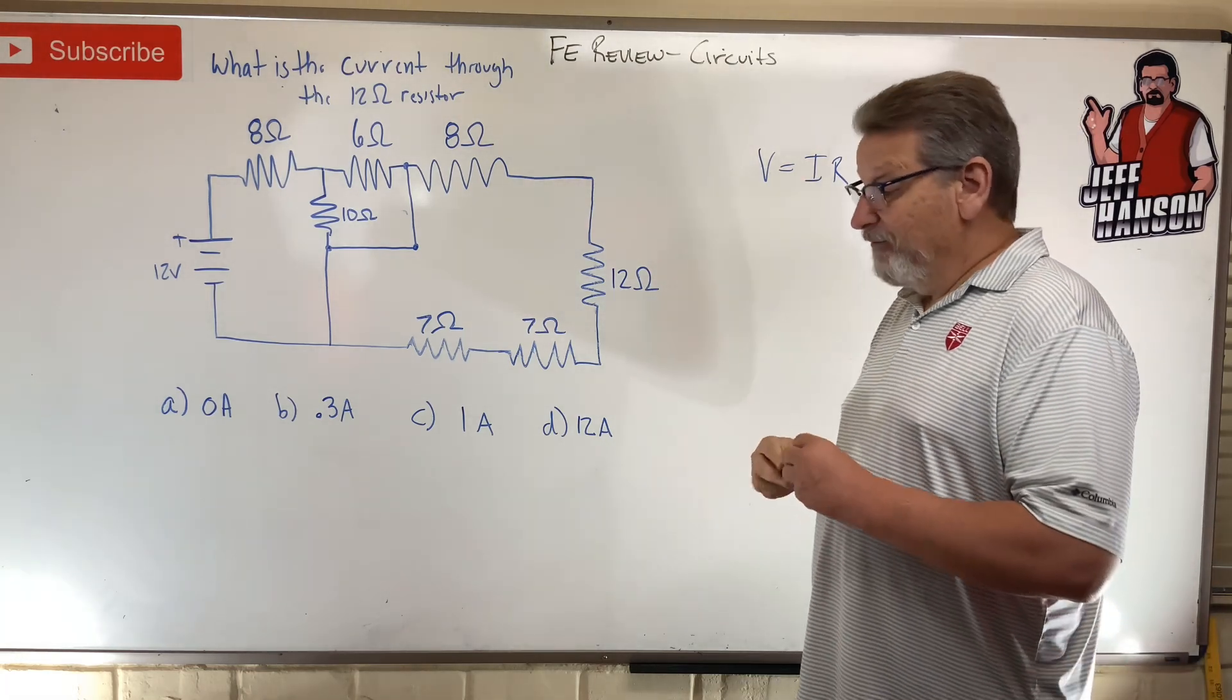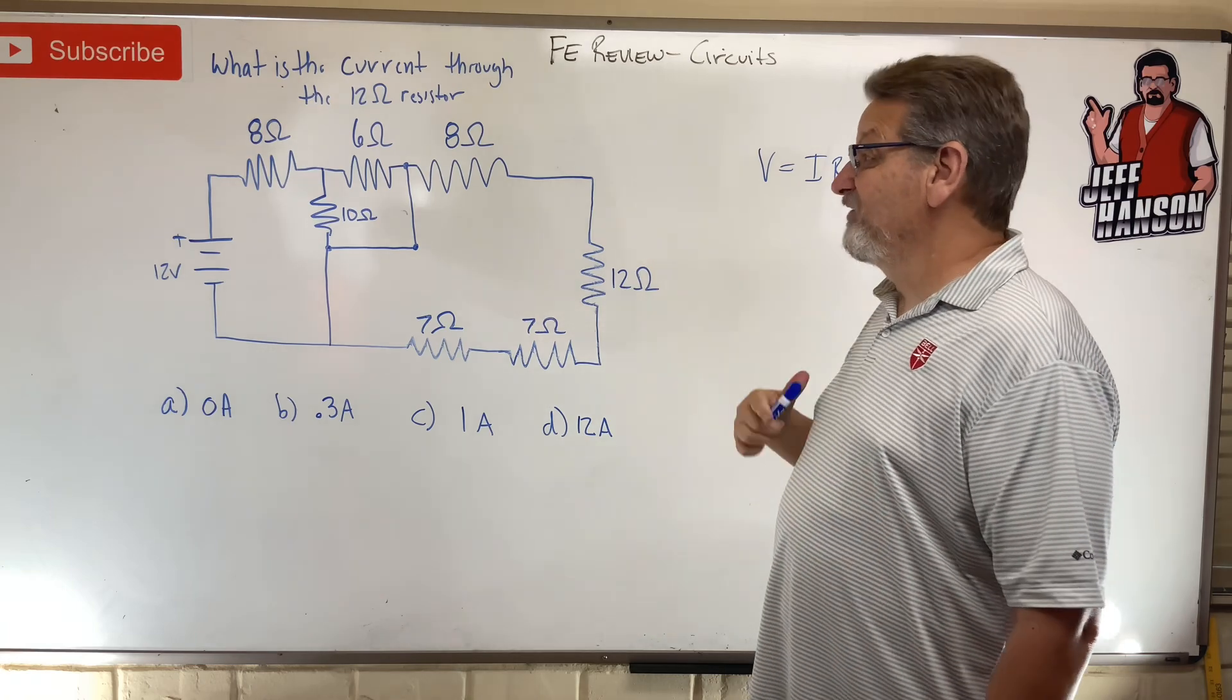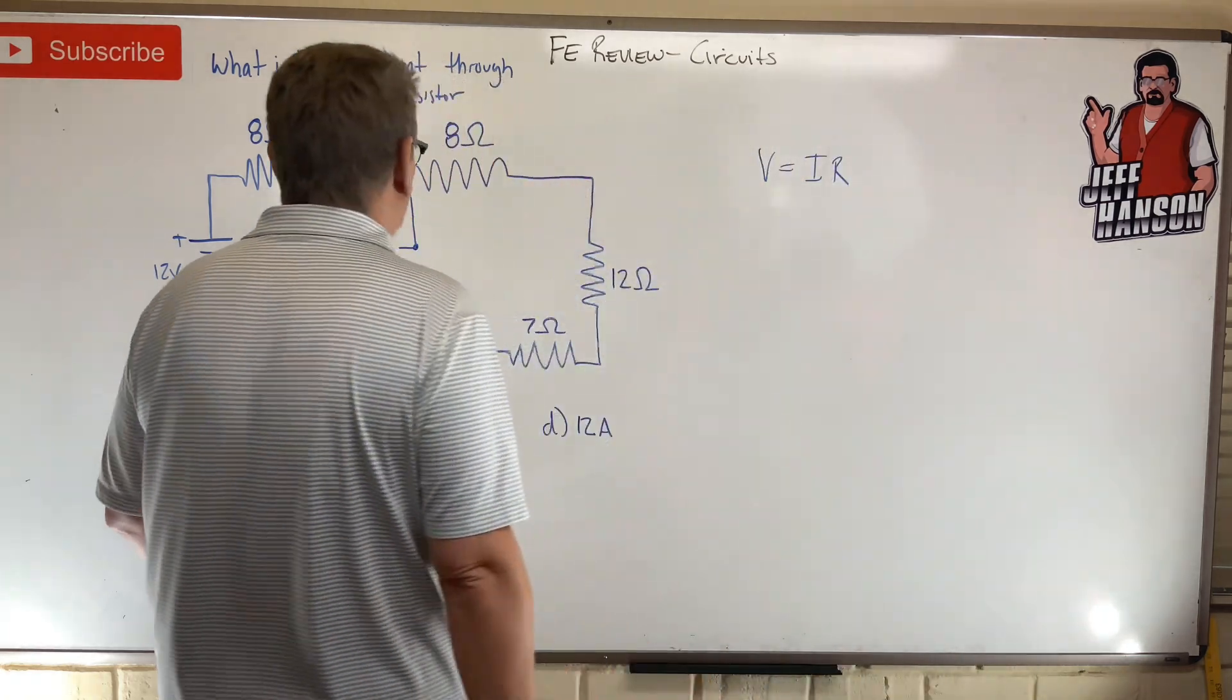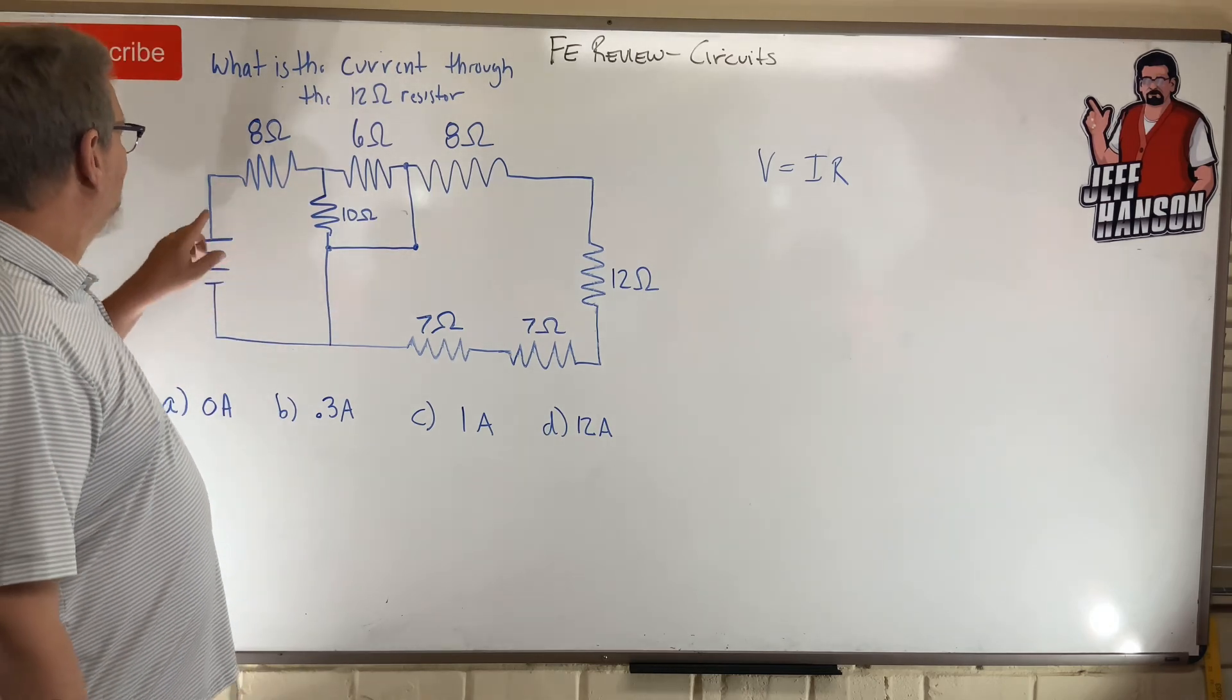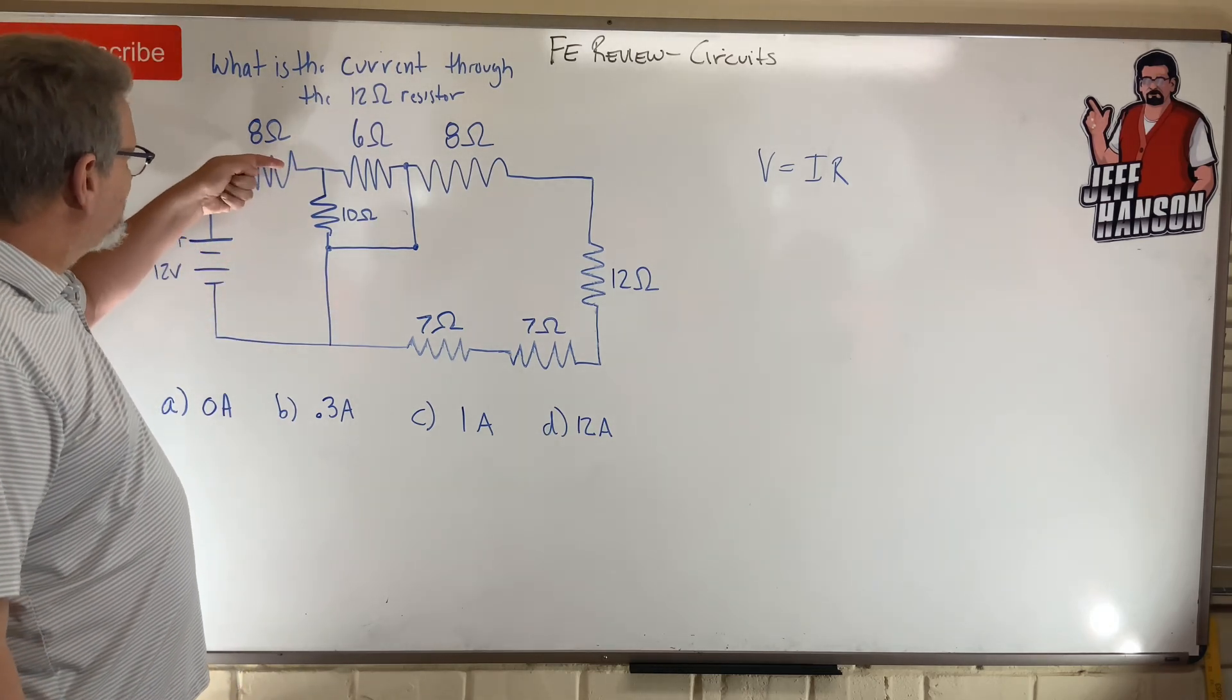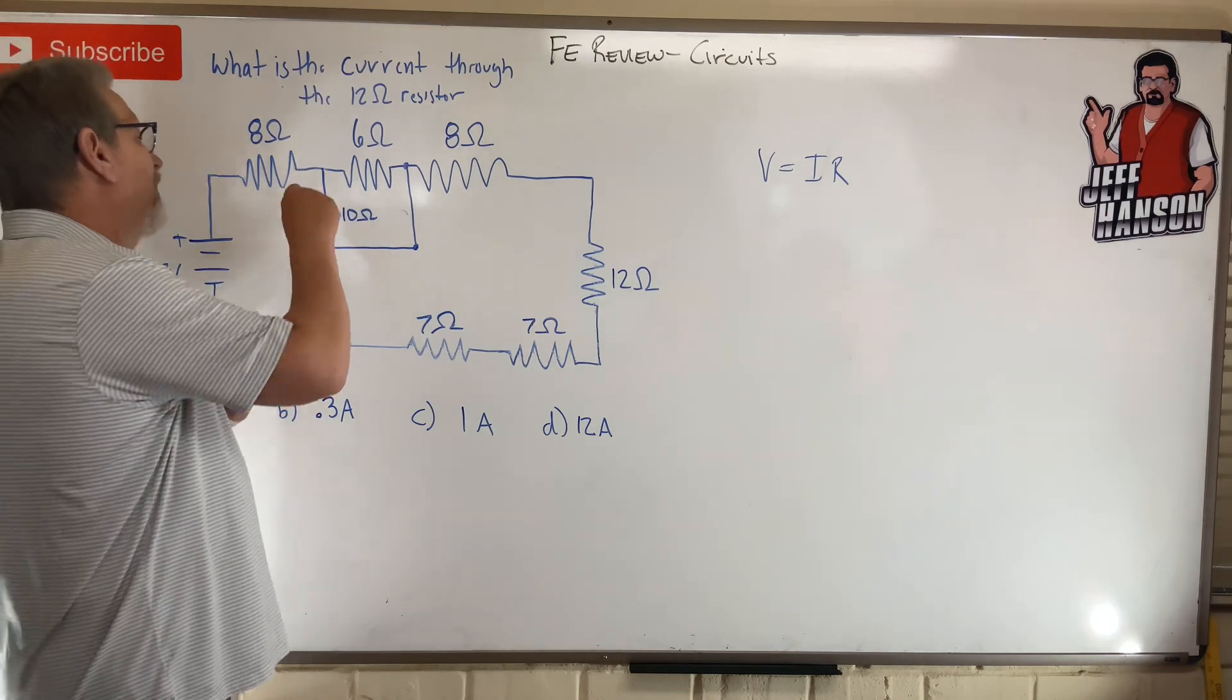I can calculate that. Well, you could, but not on this one because this guy right here, so the electricity has to go through this resistor, then it comes to this path, to the fork in the road.